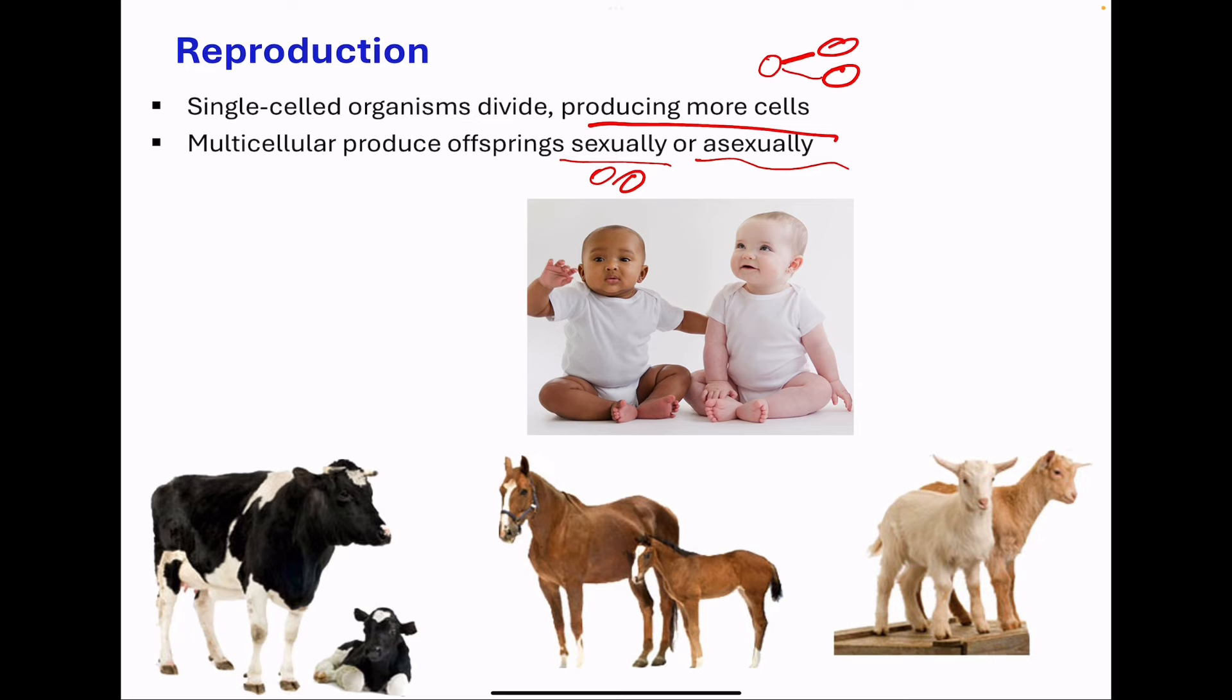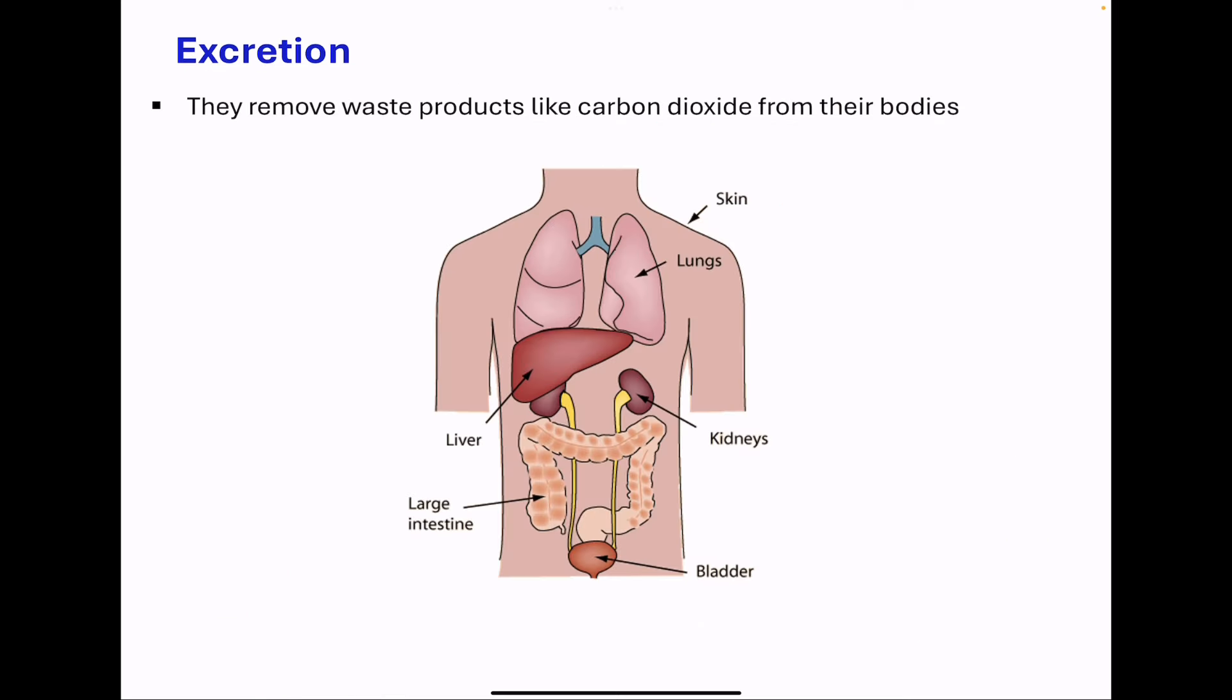All living things carry out excretion. For example, in animals or in humans, excretion can occur through the skin, where sweat is going to come out, releasing ions like sodium chloride out of the body.